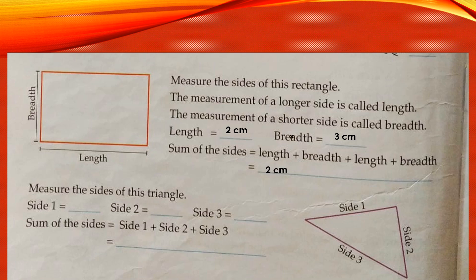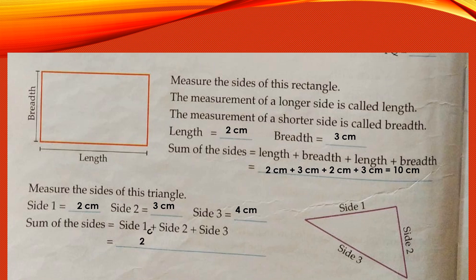Length 2 centimeters, breadth 3 centimeters, then again length 2 centimeters and breadth 3 centimeters. When you add them all up, you will get 10 centimeters. Now, we are going to add the measures of all the sides of a triangle. Let us take side 1 as 2 centimeters, side 2 as 3 centimeters, and side 3 as 4 centimeters. When you add all these, you will get 9 centimeters. In this way, you can measure and calculate the sides of shapes.